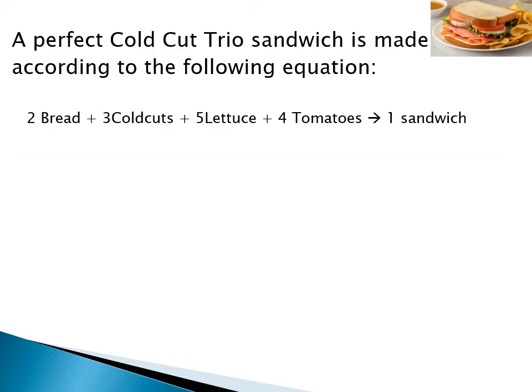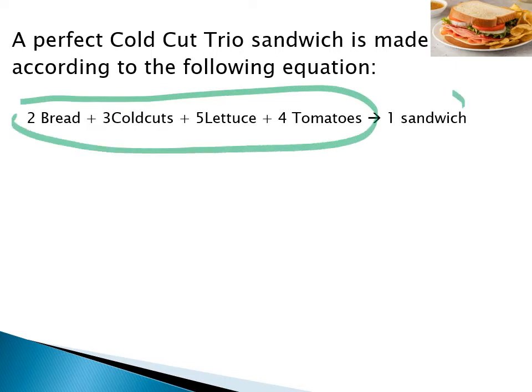As an analogy: any time you have a process of producing something there are going to be inputs and outputs. Making a sandwich has ingredients as inputs and the sandwich as the output — think of that as a chemical reaction. We have reactants on the left, products on the right; they combine in a particular ratio and produce a certain amount of product.